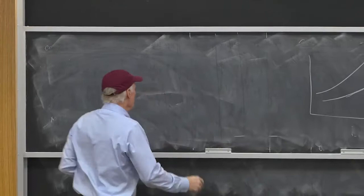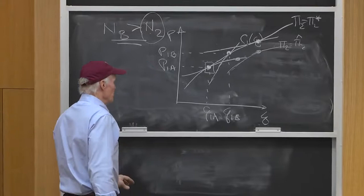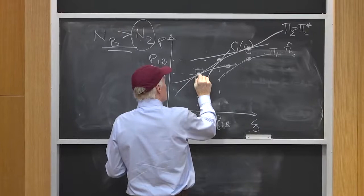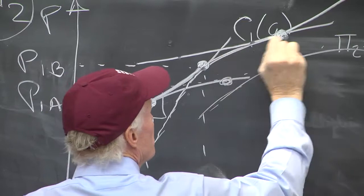Now one thing interesting about my equilibrium locus here is you'll notice, if we go back to my original problem, from here to here we follow the consumer's curve, from here to here we follow the producer's curve, because that's who had to be indifferent across those two regions.